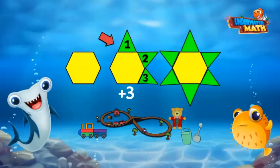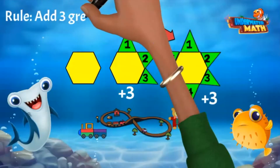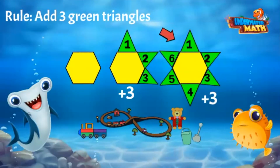It is growing by three — three tiles are added to the core for a total of four tiles. In the third figure, another three triangles are added to the hexagon. Growing patterns follow a rule. Since three new tiles were added each time, that's the rule: three green triangles are added each time.